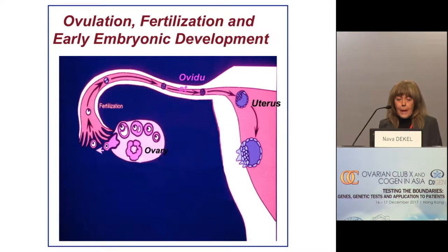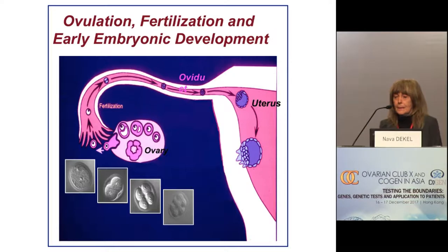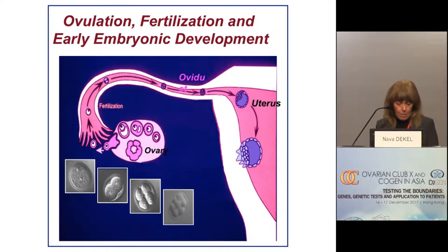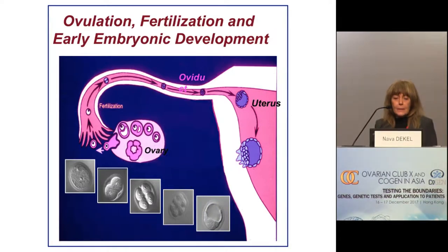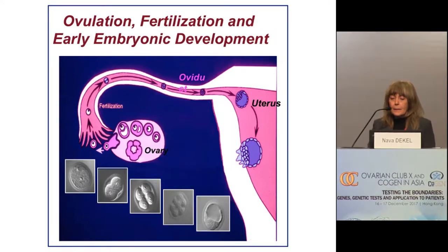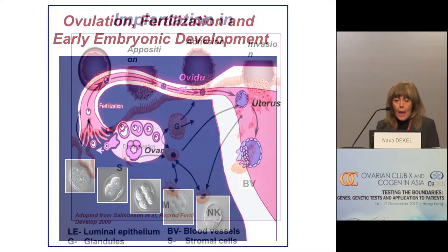Fertilization takes place at the distal end of the oviduct and is followed by the formation of the one-cell embryo. A series of successive cell divisions will result in the development of the two-cell, four-cell embryo and the morula, and this takes place along the journey of this early blastocyst through the oviduct. It is only when the early embryo develops into the blastocyst that it leaves the oviduct and rolls down into the uterus for implantation.